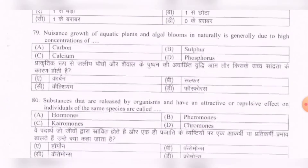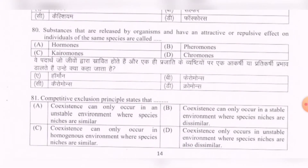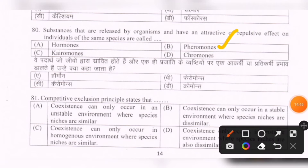Next question: Substances that are released by organisms and have an attractive or repulsive effect on individuals of the same species are called — options are: hormones, pheromones, kairomones, chromones. The correct option is B — pheromones.